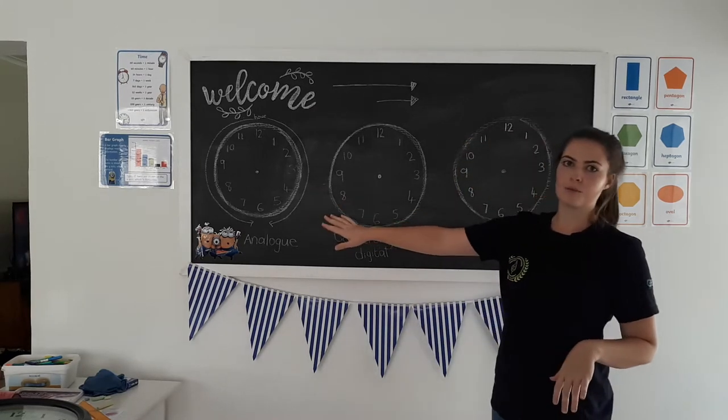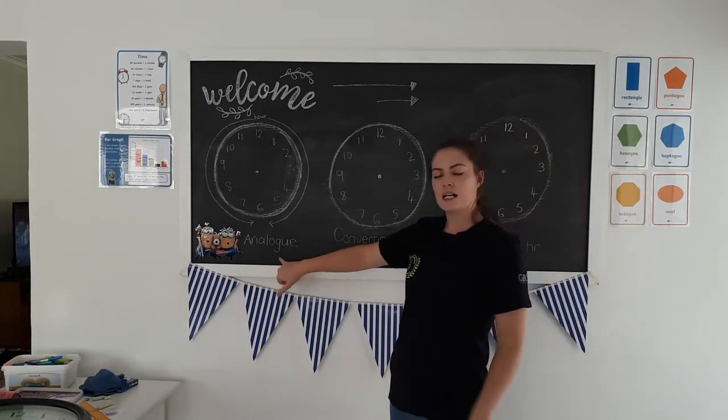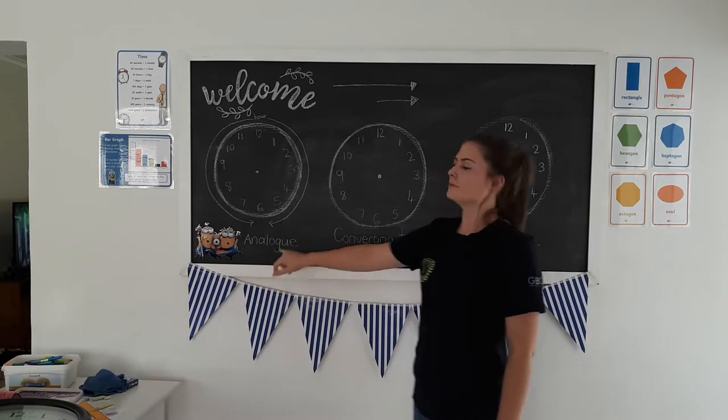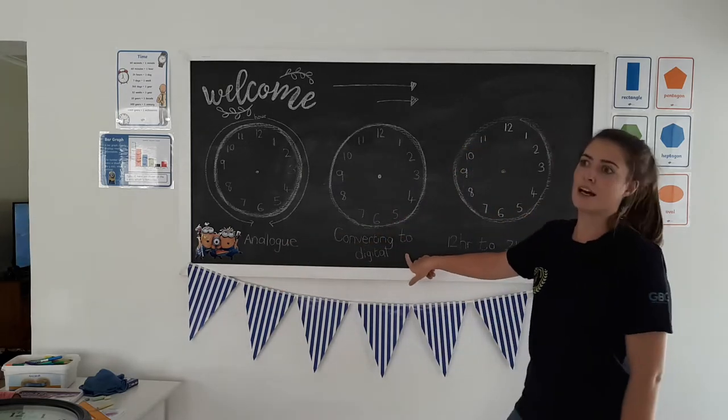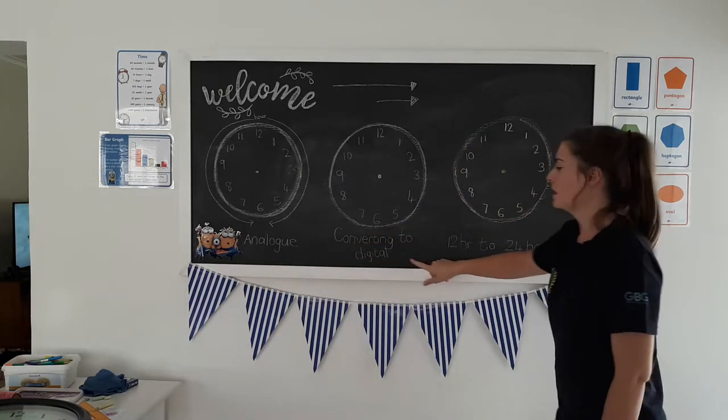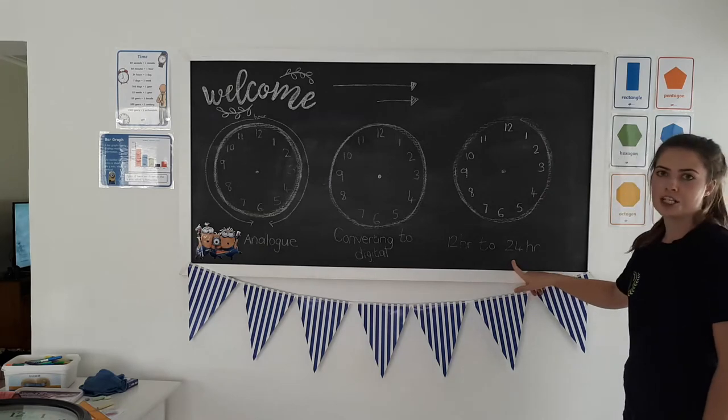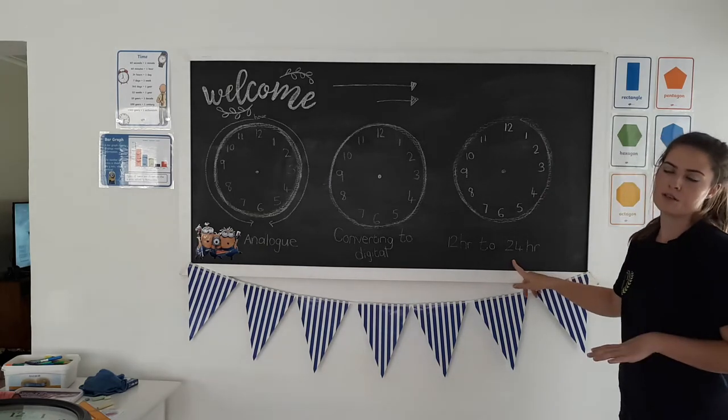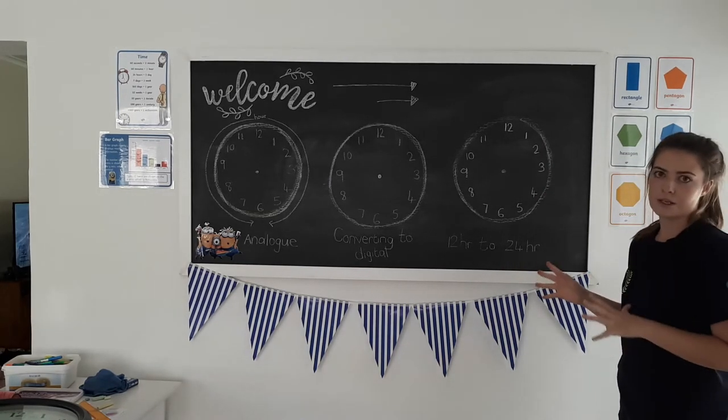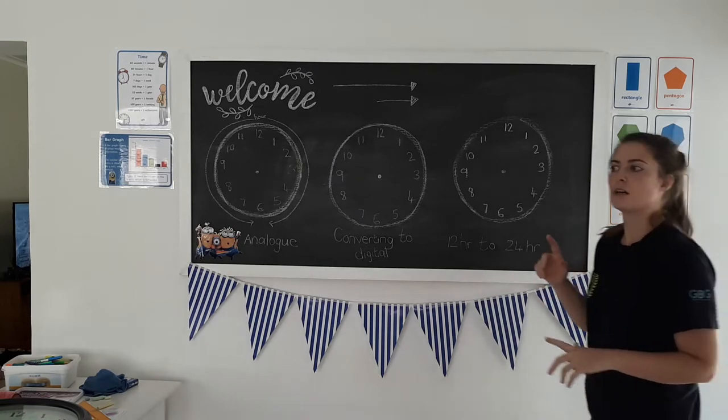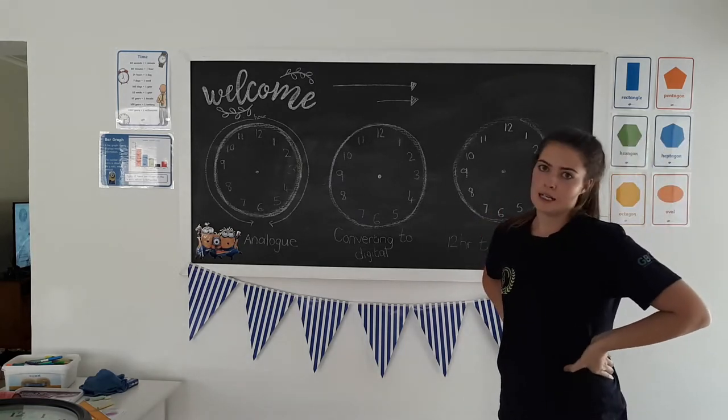We're going to focus on three main parts. First, how to tell the time on an analog clock, how to convert analog time to digital time, and lastly, how to change between a 12-hour and a 24-hour clock. All of this we have done before, it's just to help jog your memories and recap.